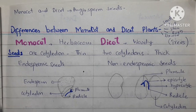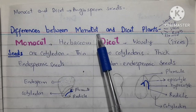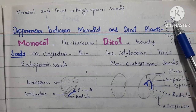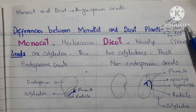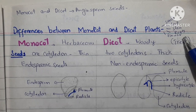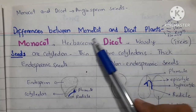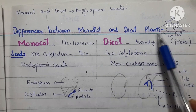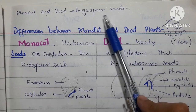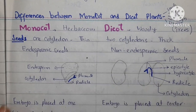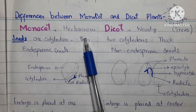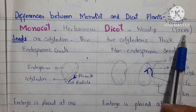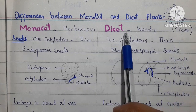Assalamualaikum students. In today's lecture we study the basic difference between monocot and dicot plants. We will study this difference between seeds, leaves, stems, roots, and flowers. We have to keep in mind that monocot and dicot plants are angiospermic plants. Monocot plants are actually herbaceous plants, and the dicot plants are woody plants — all the trees that we see around us are dicot plants.